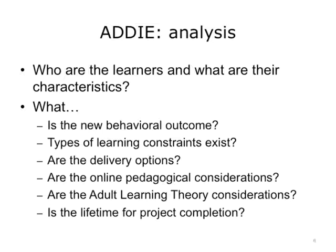What is the training and learning culture in the clinic? What is the new behavioral outcome? Has management clearly defined the goals or outcomes of the training? Also consider what types of learning constraints exist and what are the delivery options — classroom training, one-on-one coaching, stand-alone web-based training, a written training manual, maybe all of these, or a combination of just a few.